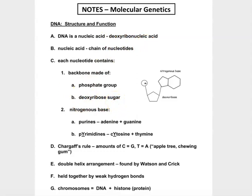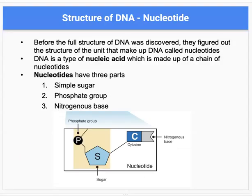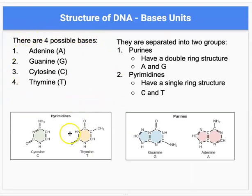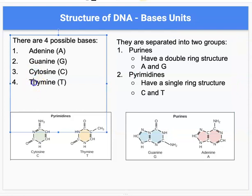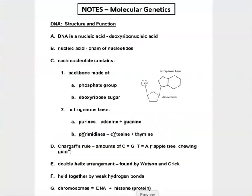And then for number two here, it said nitrogenous base. We spent a long time talking about this, but there were four possible bases here: adenine, guanine, cytosine, and thymine. They were separated into two groups - that purine group with the double ring structure down here, and then the pyrimidines with a single ring structure over here. The thing I want to highlight is that we talked about the reason you can know which one is which is because pyrimidines have a Y, so does cytosine, and so does thymine. So for this question here, when it said adenine and guanine, those are purines, and cytosine and thymine are pyrimidines.